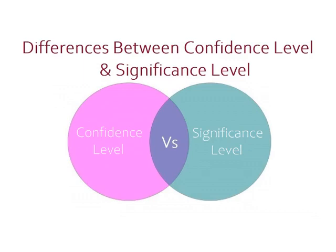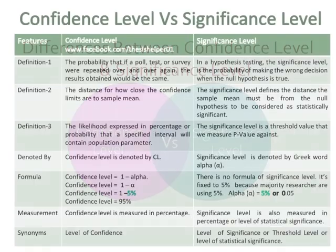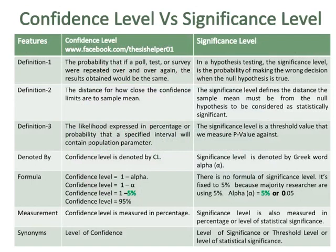Differences between confidence level and significance level. Confidence level versus significance level. Definition 1 of confidence level is the probability that if a poll, test, or survey were repeated over and over again, the results obtained would be the same. While in hypothesis testing, the significance level is the probability of making the wrong decision when the null hypothesis is true.